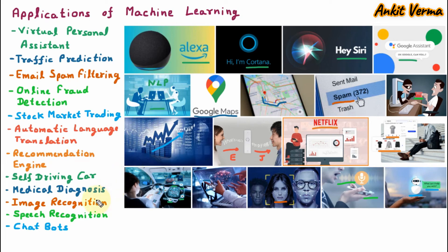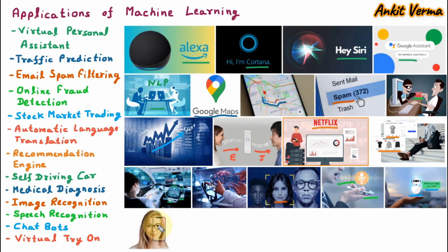The next application is virtual try-on, meaning we can virtually try something. For example, if we want to purchase glasses, we can virtually place them on our face and check which ones look good. Or if we want to purchase jeans, we can virtually try them. Using machine learning, we can virtually try the things we want.